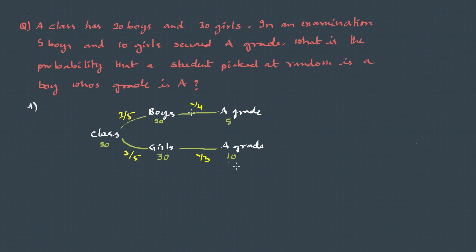The question asked is probability that a student picked at random is a boy whose grade is A. That's probability of a boy and he's having grade A. And using the Bayes' theorem, we can write this as... and when we substitute these values, we get 1/3.